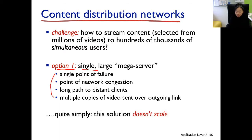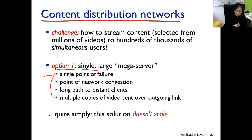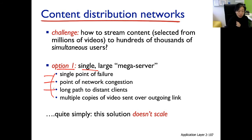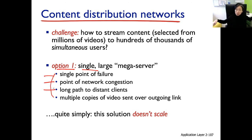Using one server, we have the single point of failure issue. That server goes down, the entire service goes down. The mega server goes down, the video streaming service is also down. That one server is also the point of congestion because everyone is asking for its service. Part of the world will be happy because they are close to the server, but the rest of the world will be unhappy because they are farther away, and long delay is not good.